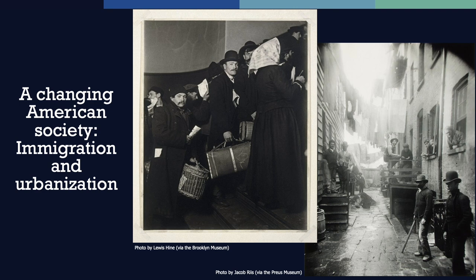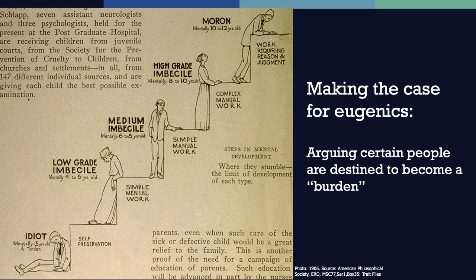One tactic used by eugenicists to limit the population of those deemed undesirable was restriction of immigration. The U.S. Immigration Restriction Act of 1924 was strongly influenced by eugenicists who lobbied and worked closely with members of Congress to shape the legislation. The act severely restricted immigration, particularly of Eastern European Jews, Italians, and other southern Europeans and Africans, and banned the immigration of Arabs and Asians. This act prevented thousands of European Jews attempting to flee persecution by the Nazis from entering the United States during the 1920s and 30s.